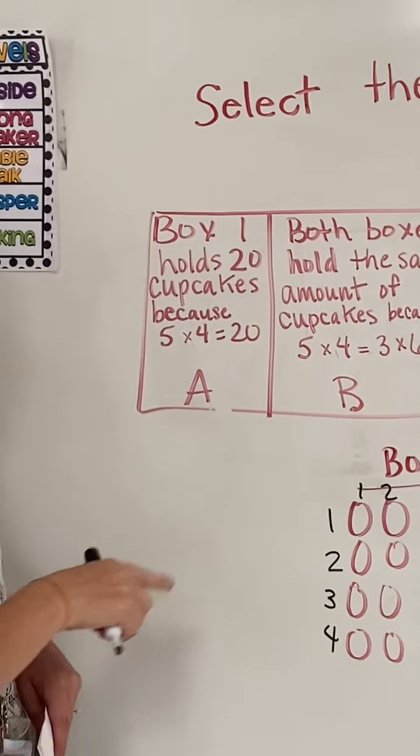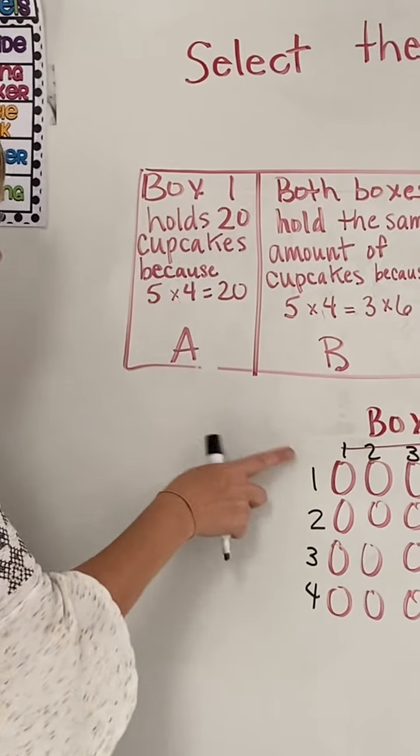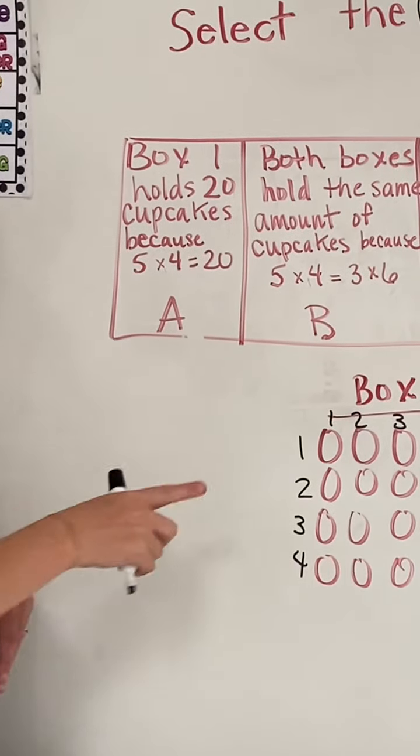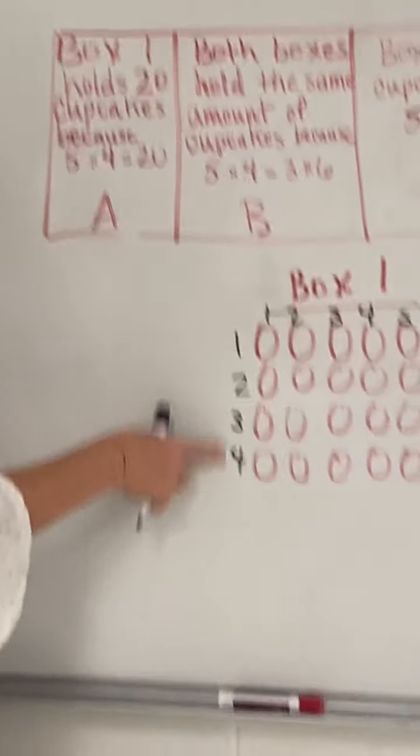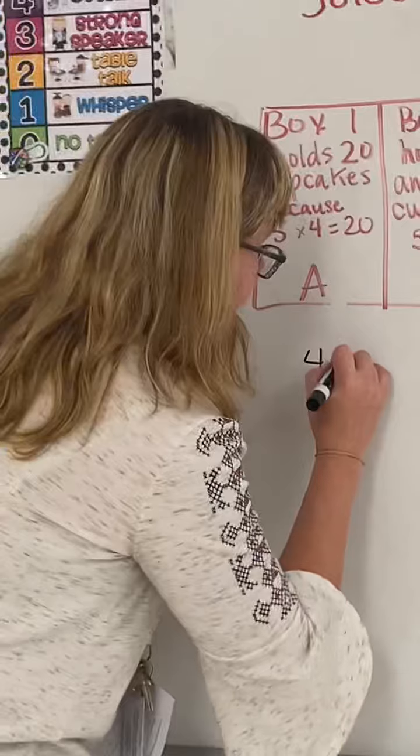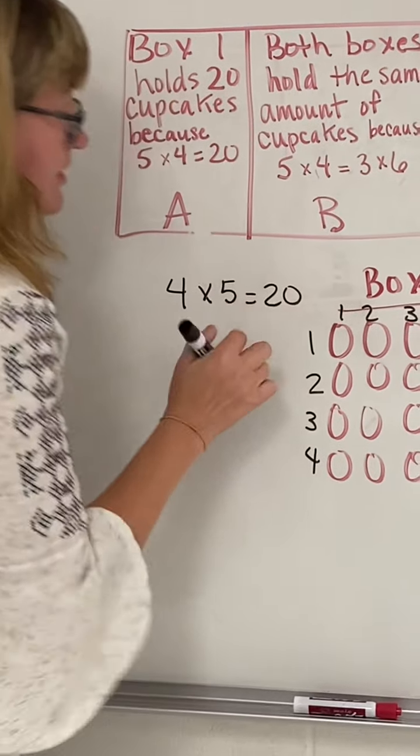All right, so this one says box one holds 20 cupcakes because 5×4 is 20. We do have this one. It's 4×5, which makes 20.